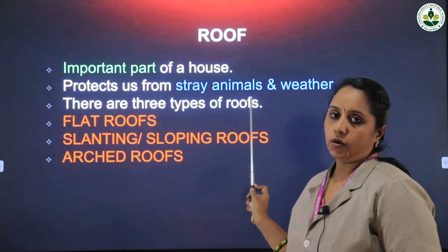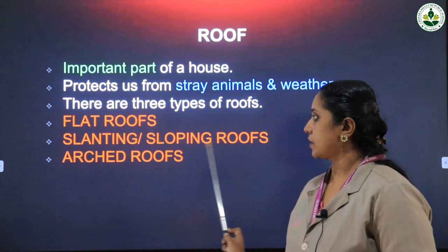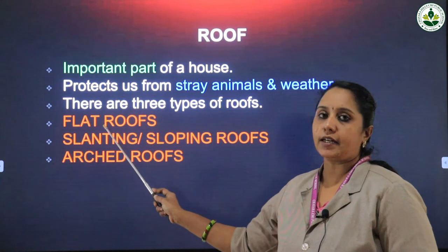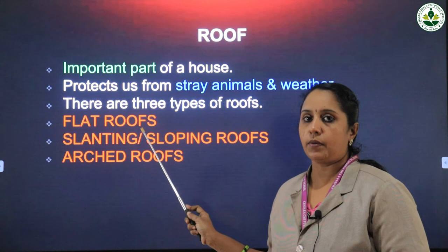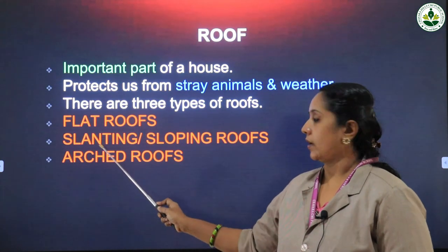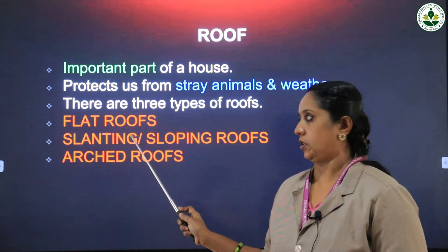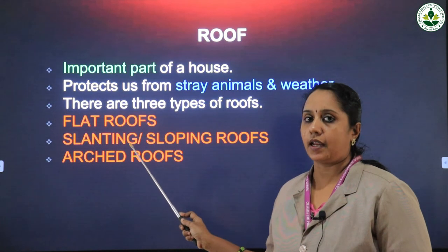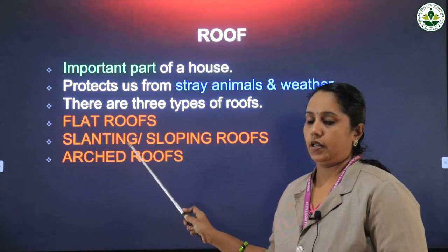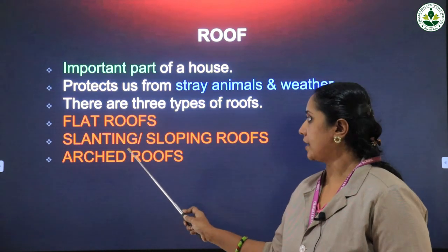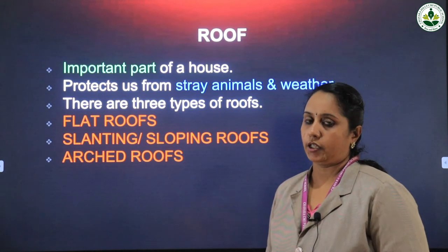There are three types of roofs. The first is flat roof — the shape of a flat roof is just flat, and we can see almost all buildings here have flat roofs. The second is slanting or sloping roofs — from the name itself, we know it has a slanting position. The third is arced roof, which has a circular shape.